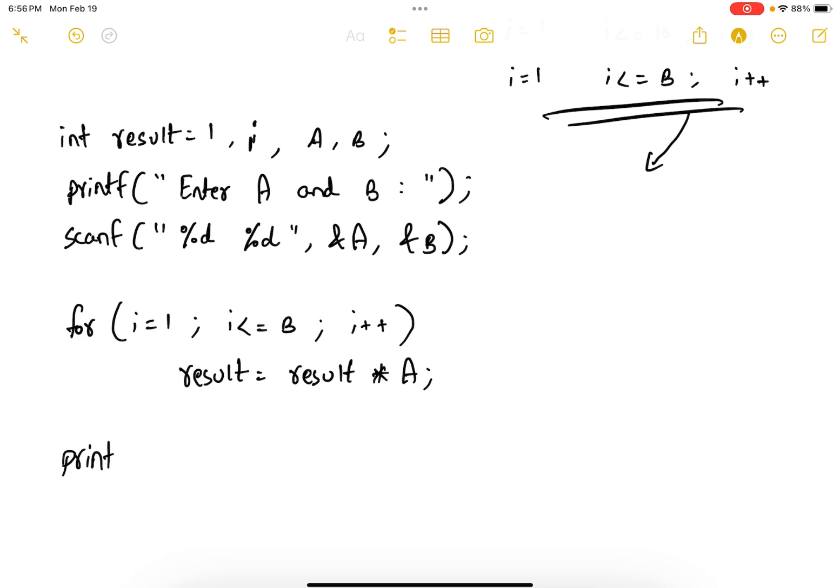And outside my loop I can have printf percent d power percent d equals percent d, comma a comma b comma result.